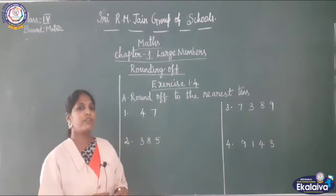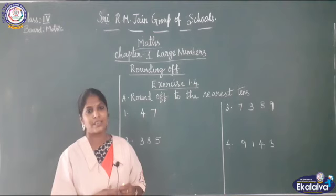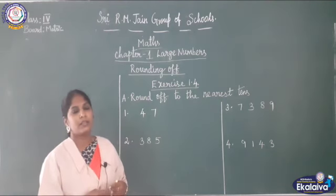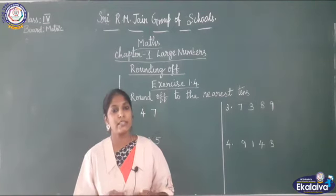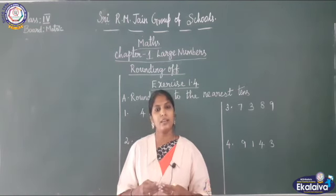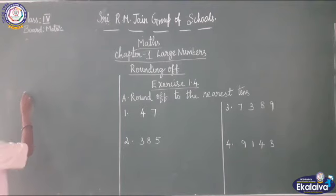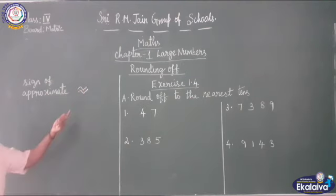What is rounding off? You are rounding off to the nearest number. In all cases it is not necessary to say the exact value or actual value — you can say the approximate value also. For example, 385 students have attended the training program. It is not necessary to say 385; you can say approximately 400 students attended. This is called the approximate value, and we use the approximate sign like this.